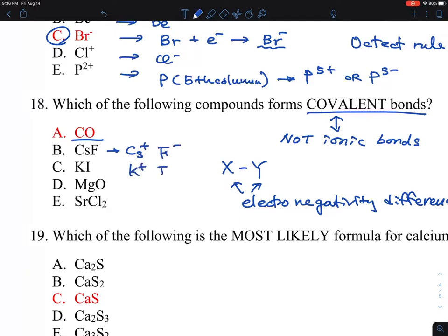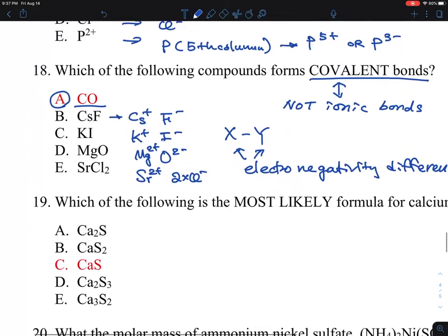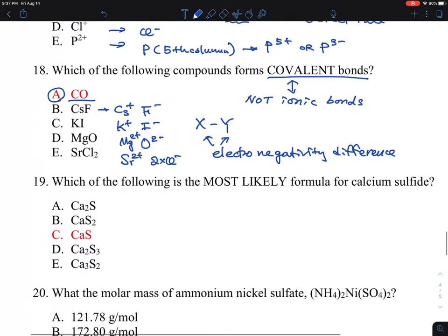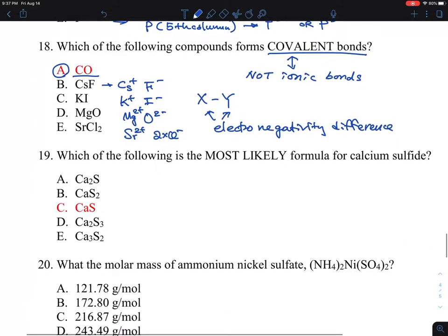potassium plus, iodine minus, oxygen is 2 minus, magnesium is 2 plus, and then strontium is 2 plus, and then 2 times chlorine minus. So this is all like ionic species, whereas carbon monoxide is, there's a covalent bond between this, because carbon and oxygen has a relatively smaller electronegativity difference as well.